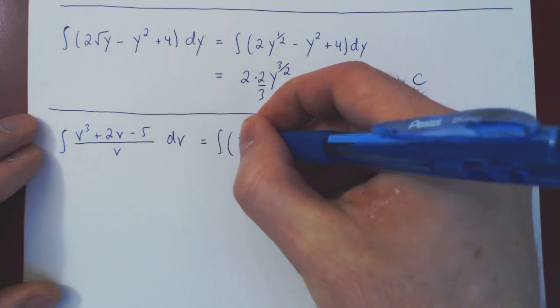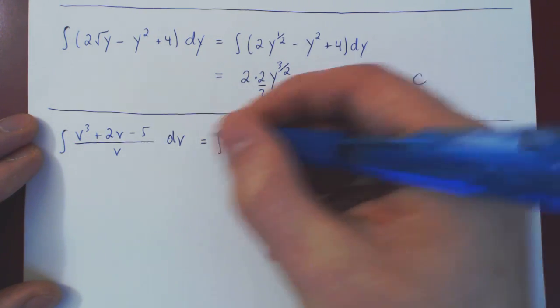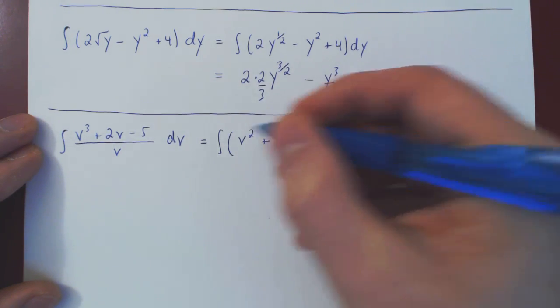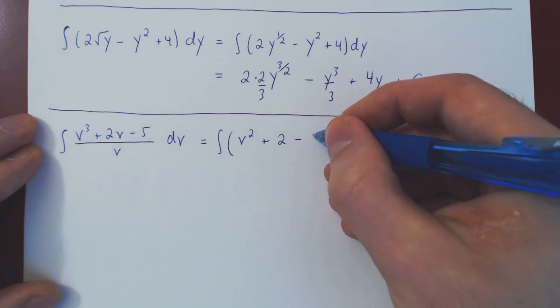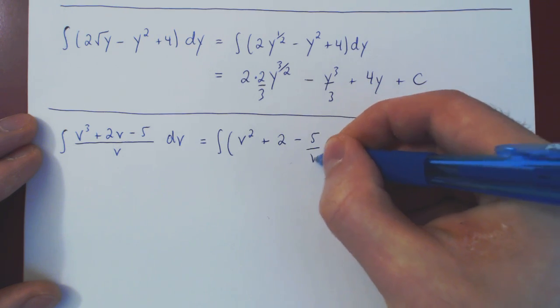So, v cubed over v is v squared, plus, v over v is 1, so plus 2, minus 5 over v. And I will leave this as 5 over v, as it is our exceptional case.